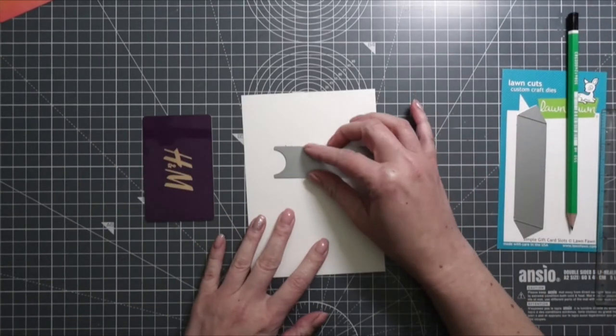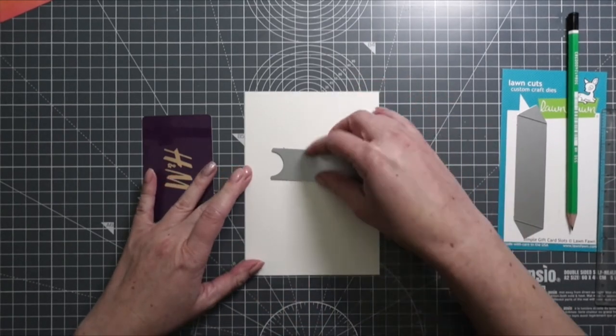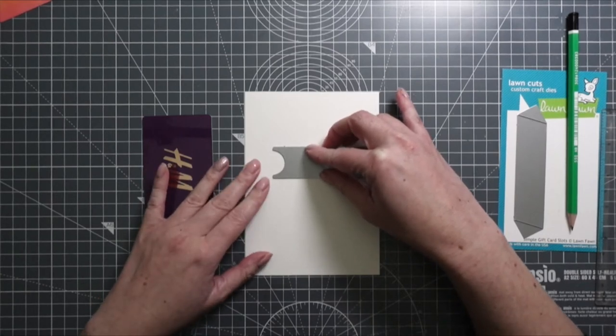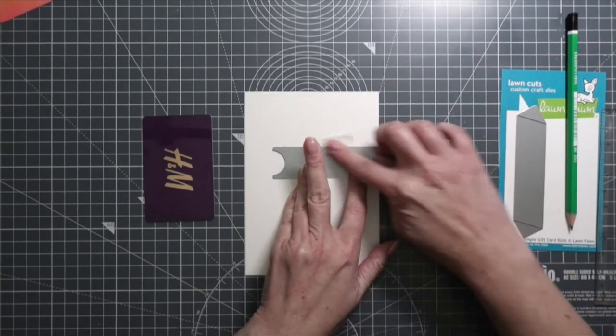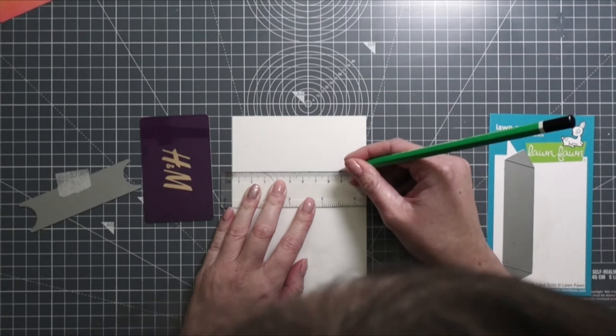I die cut my cardstock to A6 size, the European size. The way I measured it: first I needed to decide where I want the card and how far from the top. Next, I figured out where the middle of the gift card is.